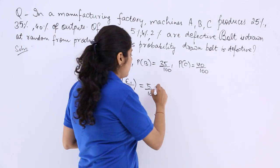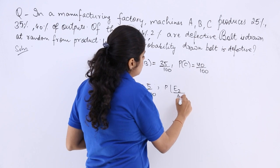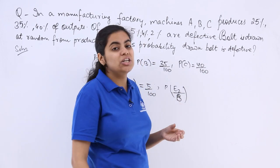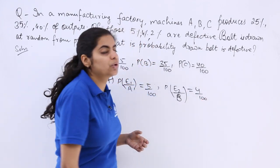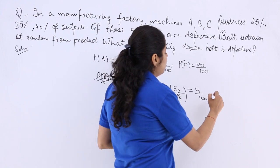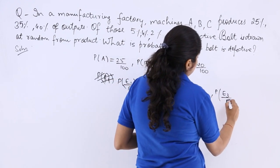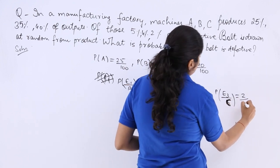Probability of having defective when it is from B, it is given to you as 4 over 100 or 0.04. Now, probability of defective when it is considered that it is from C is 2 over 100.